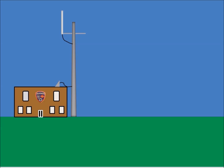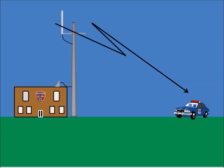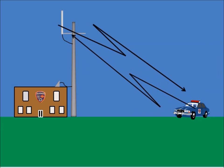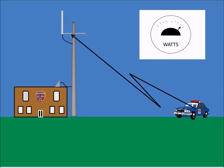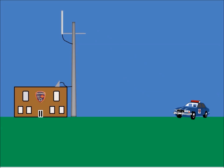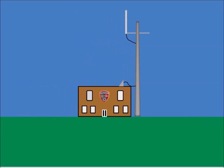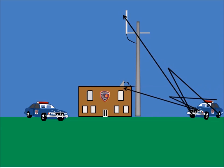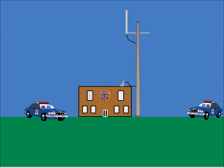One benefit of a simplex system is that there is no infrastructure between the subscriber unit and the base station — no site maintenance concerns. A disadvantage is that both the base and the subscriber need high power to attain good radio coverage, so mobile radios are typically used. Other subscribers may not hear a subscriber talking to the dispatcher, and if they transmit at the same time, signals compete with each other, causing interference heard by the dispatcher.